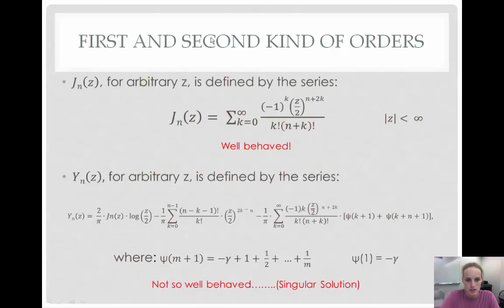j sub n of z for arbitrary z is defined by this series: the sum from k equals zero to infinity of negative one to the k times z over two to the n plus 2k all over k factorial times n plus k factorial. This one is considered the well-behaved one.